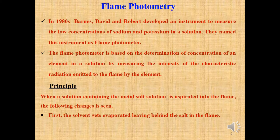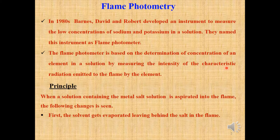Flame photometry was developed in 1980 by three scientists — Barnes, David, and Robert — who developed an instrument to measure the low concentration of sodium and potassium in a solution. They named this instrument the flame photometer. The flame photometer is based on determination of concentration of an element in a solution by measuring the intensity of characteristic radiation emitted to the flame by the element.